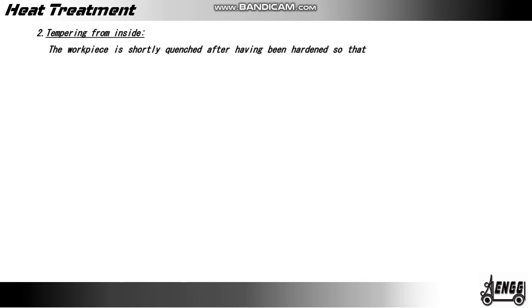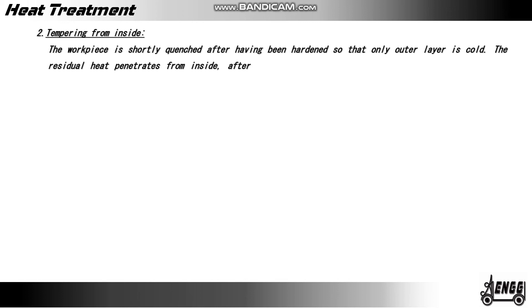Type 2: Tempering from inside. The workpiece is shortly quenched after having been hardened, so that only the outer layer is cold. The residual heat penetrates from inside, and after having reached the tempering temperature, it is cooled down.